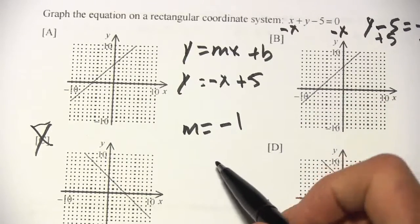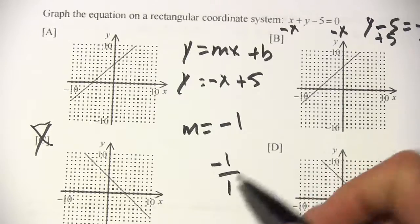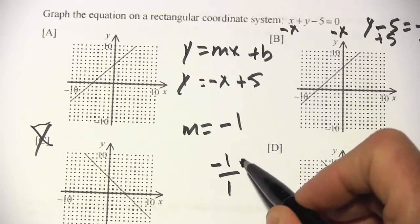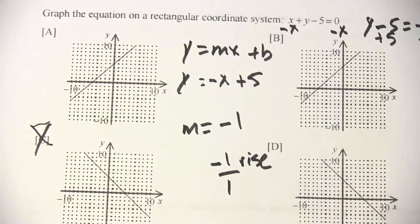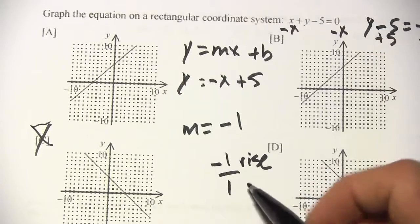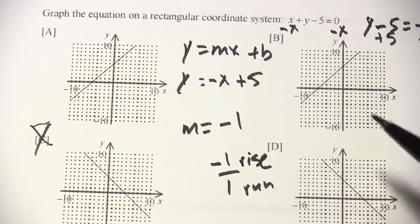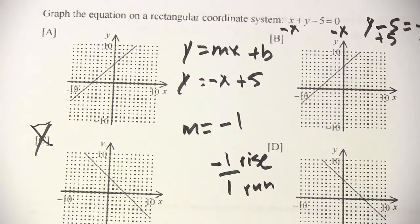And if you wanted to write that as a fraction, you could put negative 1 over 1. So our rise will be negative 1, meaning it'll go down 1. And our run will be 1. So we'll go down 1 over 1, down 1 over 1.